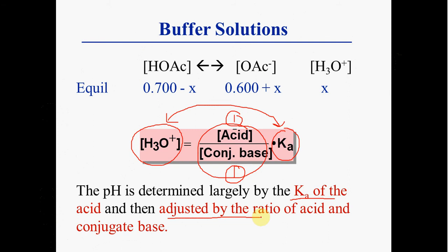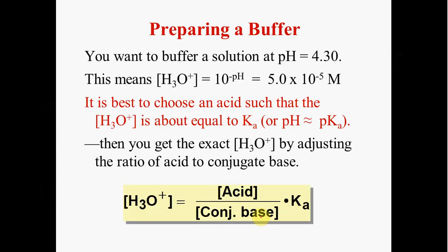Let's look at some acid choices to see how we would do this. So if you want to make a buffer at a pH of 4.3, that means your hydronium ion is 10 to the negative pH. So 10 to the negative 4.3 gives you that molarity for your hydronium ion. So you already know that part of the equation. So you're going to choose an acid that has a Ka value as close to this value as possible, or a pKa value as close to this value as possible.